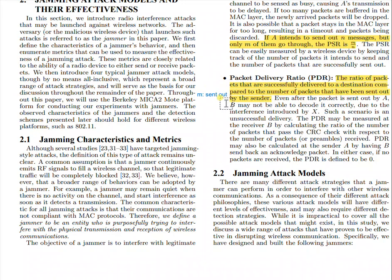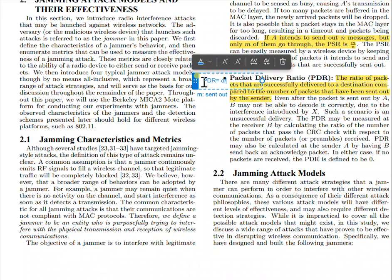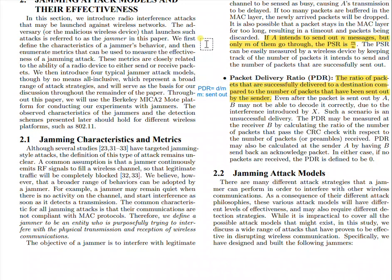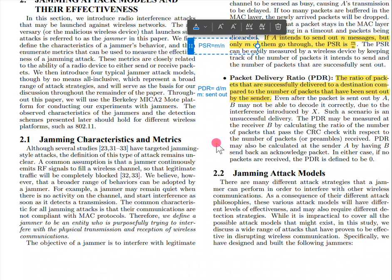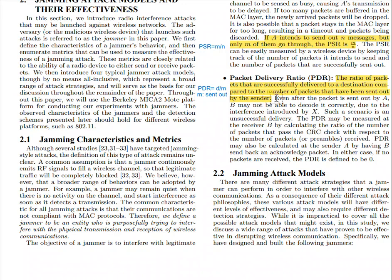So 'sent out' — in the PDR it is in the denominator. The PDR equals delivered over sent, so PDR equals M over N. The logic is that when M increases here, the PSR increases but the PDR decreases. This is a relation we already knew.